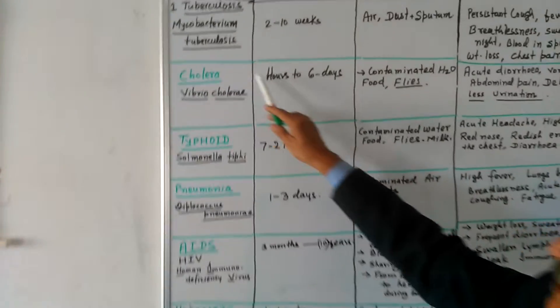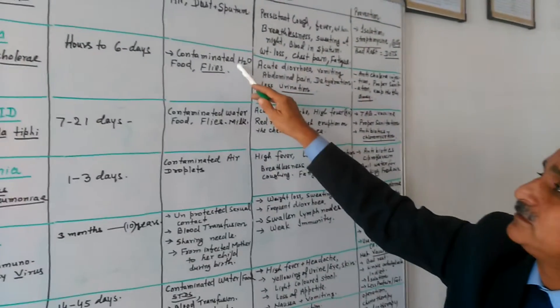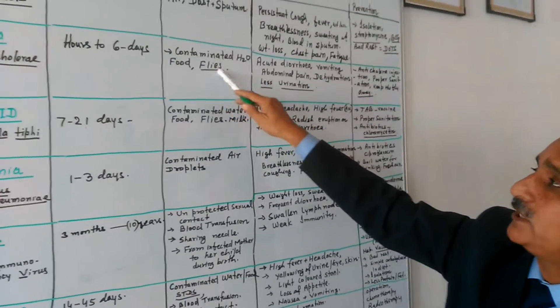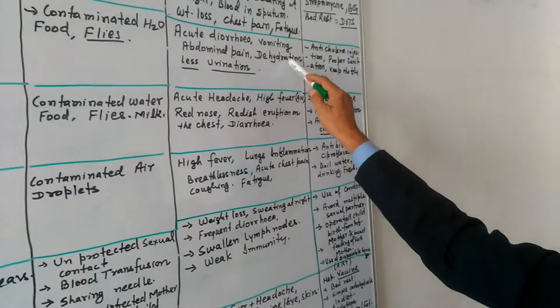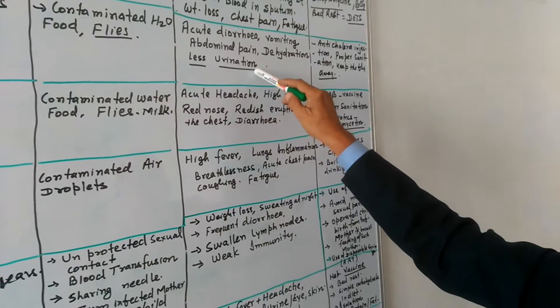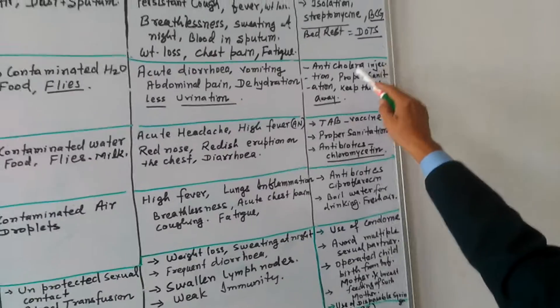Cholera, next is your cholera. It's a few hours to 6 days. Contaminated water and food and flies are responsible. Acute diarrhea, vomiting, abdominal pain, dehydration, less urination are the symptoms. And anti-cholera injection is available.